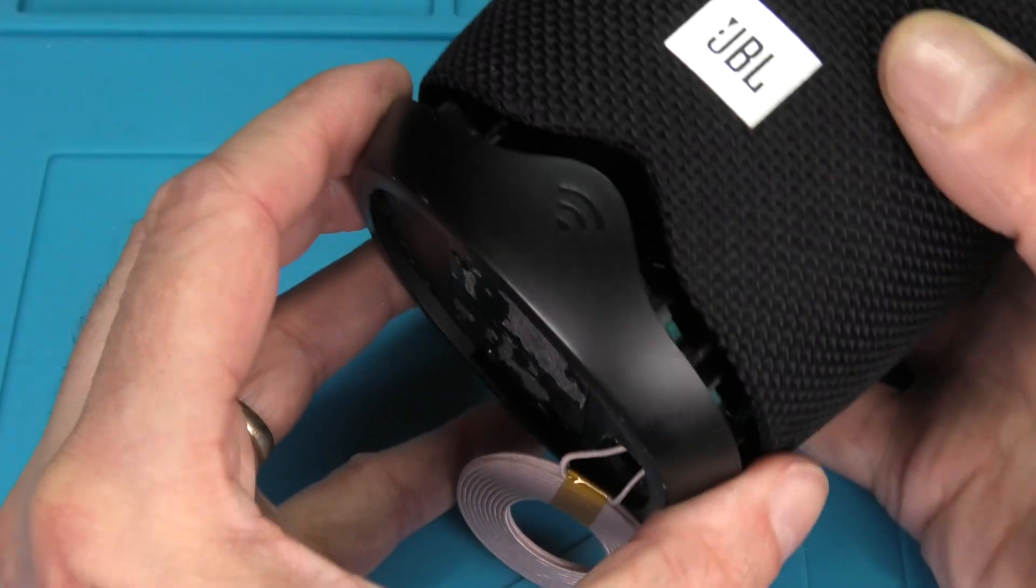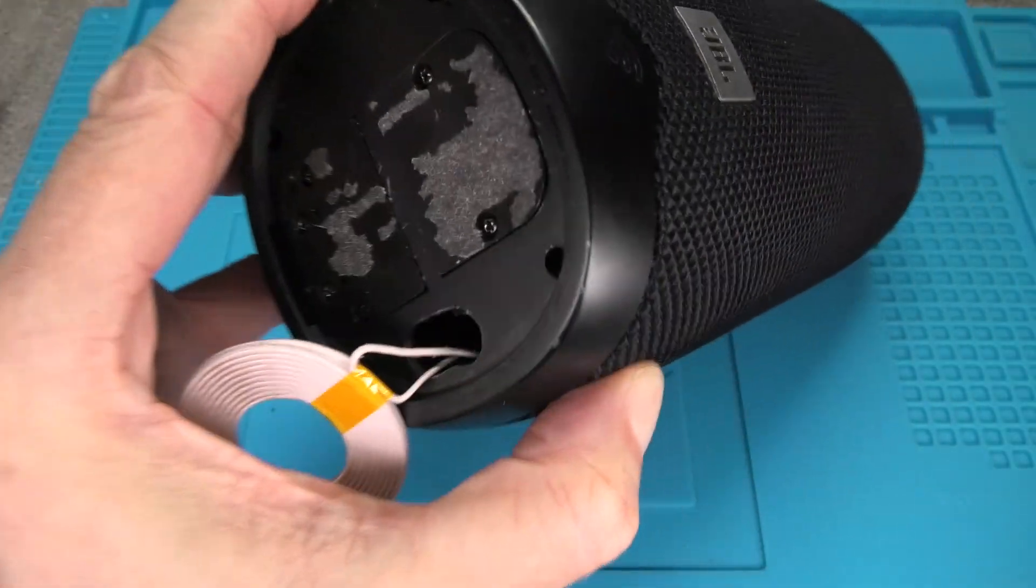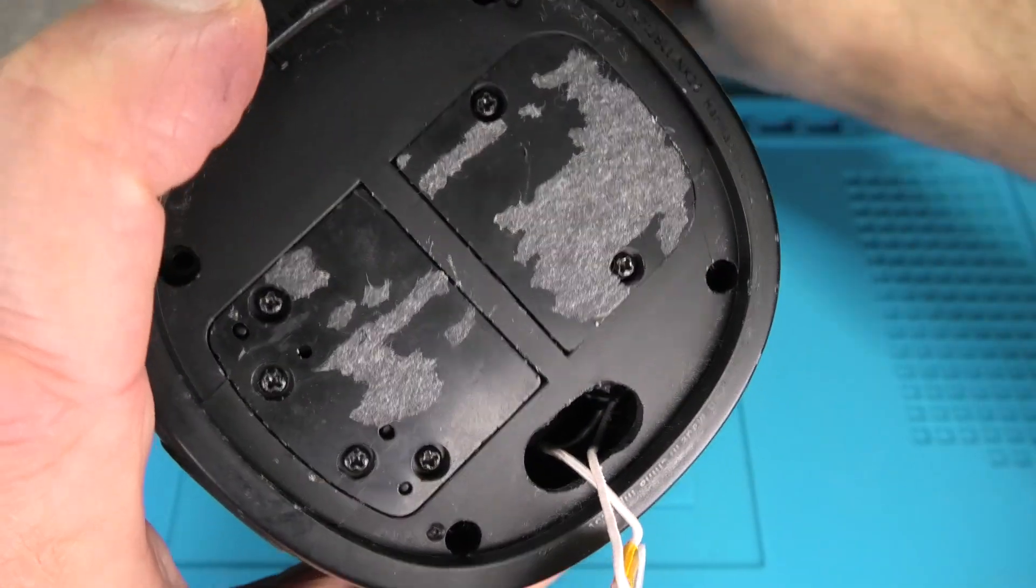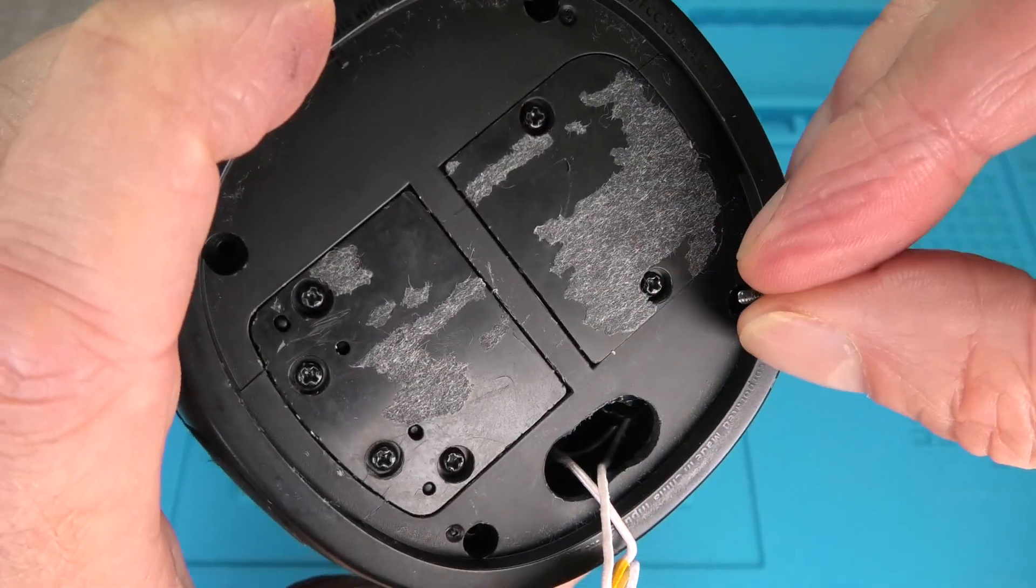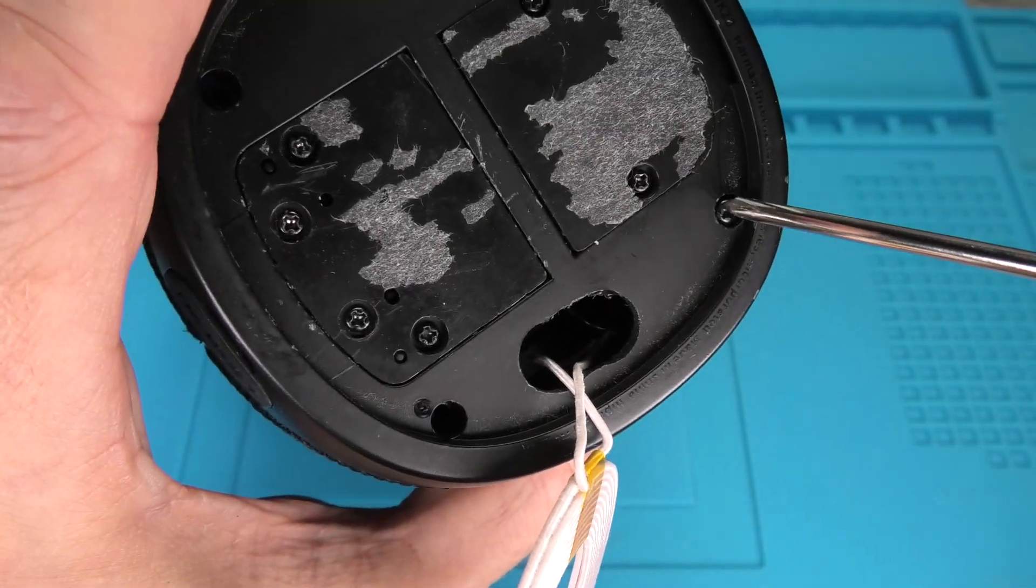And then we are ready to put the cover back on. So we are going to close up the speaker again. Make sure that you see that little wifi symbol right underneath the JBL logo. Then you have the orientation correct. And then of course we have the four small phillips screws. We are going to attach those now as well.